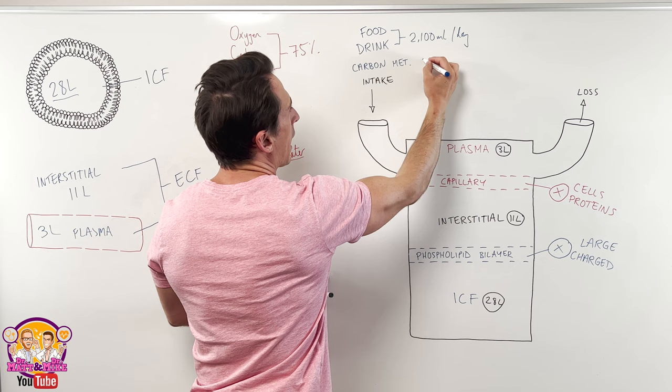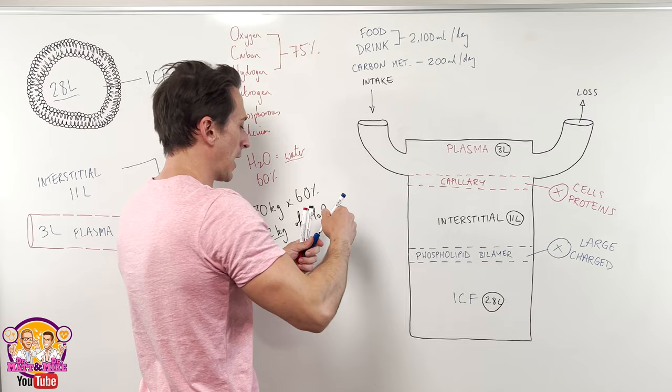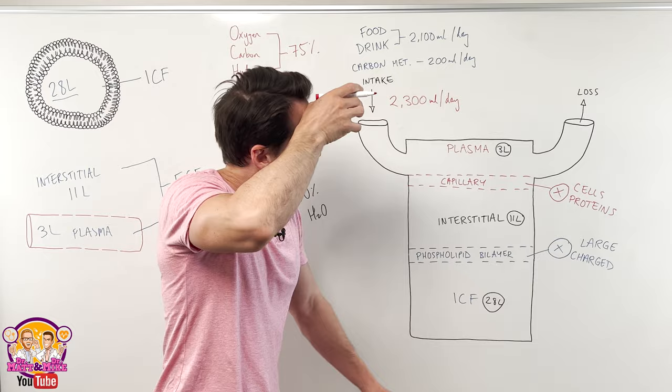And how much do we bring in through carbon metabolism? Around about 200 mils of water per day. Which is a fair bit. So cumulatively, how much are we taking in? Around about 2300 mils of water per day. So how much do we lose then per day? Well, let's take a look.